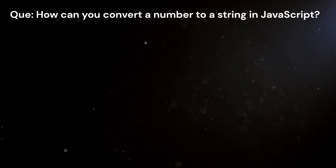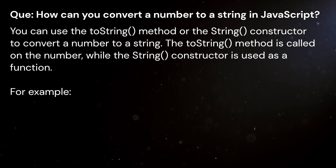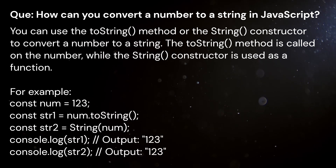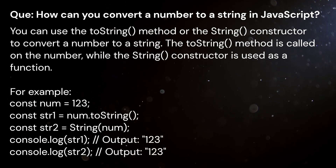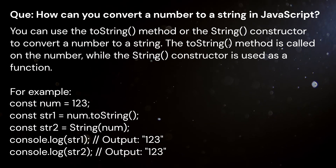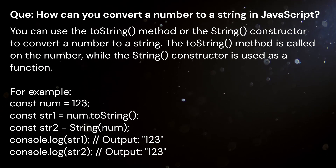Question: How can you convert a number to a string in JavaScript? Answer: You can use the toString method or the String constructor to convert a number to a string. The toString method is called on the number, while the String constructor is used as a function.